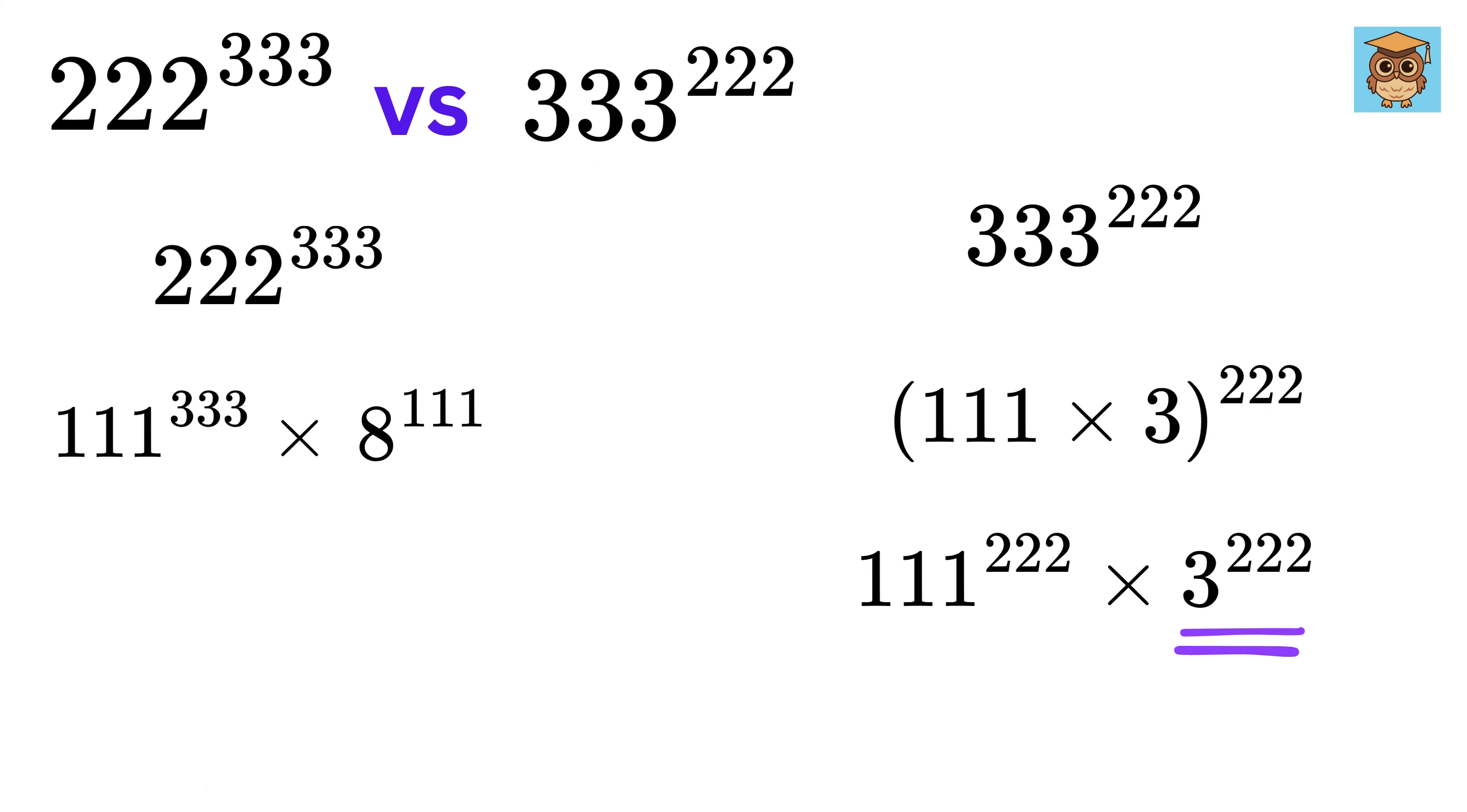Next, we can rewrite this as 3 raised to 111 times 2. And again, using this power rule, we can make it 3 raised to 2 whole raised to 111. And this 3 square will become 9. So this whole thing will be 111 raised to 222 times 9 raised to 111.